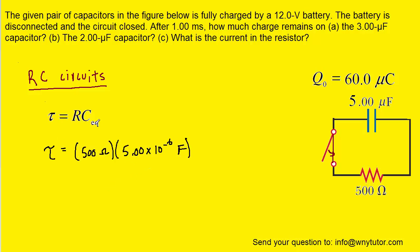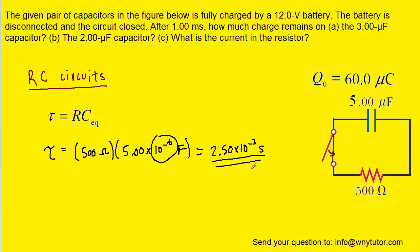For the capacitance we plug in 5×10⁻⁶, because we need to use the standard unit of farads rather than microfarads. Remember, to convert from microfarads to farads you multiply by 10⁻⁶. When we perform this calculation we get a time constant of 2.5×10⁻³ seconds for this circuit. We'll hold on to this value and use it momentarily.